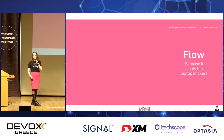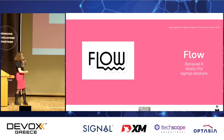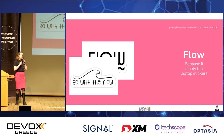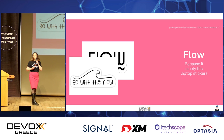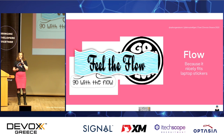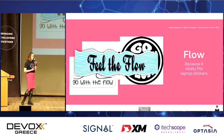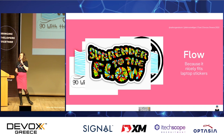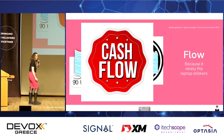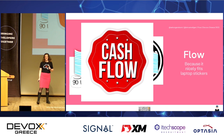This is an example: when you just start, this is the novice sticker you obtain if you finish the certification. If you're advanced, you're 'going with the flow.' If you're even more advanced, you can 'feel the flow' — so it's not that you do agile but you are agile. Even more advanced, you 'surrender to the flow.' And everything together is because we have these stickers on our laptops.